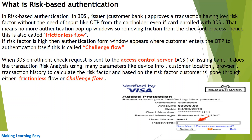In challenge flow, the customer sees the authentication form window. In frictionless flow, the customer does not see the authentication window — the transaction is approved without it, provided other parameters are valid, like credit card number and CVV. In challenge flow, the customer will see the authentication window and must enter the OTP.